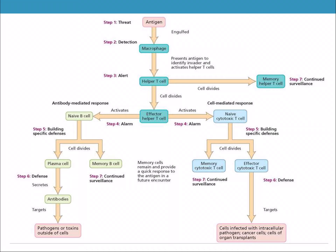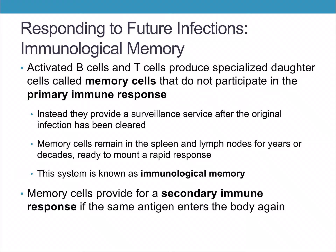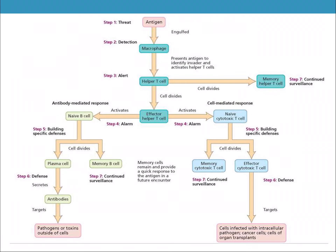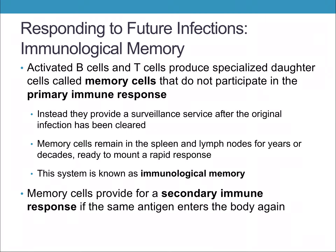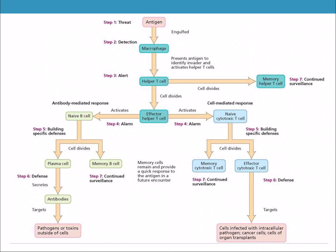This whole response takes place in response to a specific antigen. Activated B and T cells produce specialized memory cells — these don't participate in the primary immune response, but are banked away after the infection is cleared. They can remain in your spleen and lymph nodes for years, even decades, ready to mount an immune response — we call that immunological memory. If the same antigen enters the body again, these memory cells respond quickly and cut right to eliminating it before you get sick.